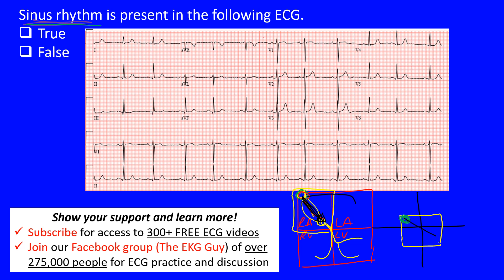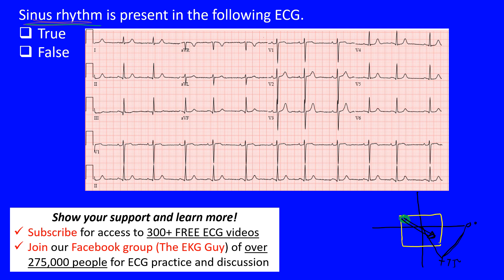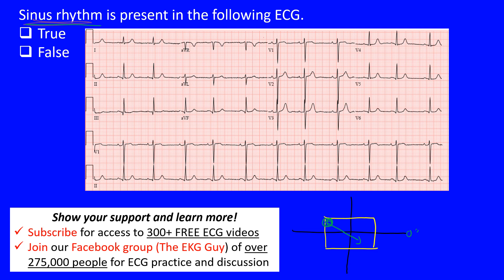When we talk about P wave axis, it heads in that direction and is situated between 0 degrees and positive 75 degrees — that is the normal P wave axis. Everything has an axis: the ST segment, T wave, P wave, and QRS complex. So normal P wave axis lies between 0 and 75 degrees.